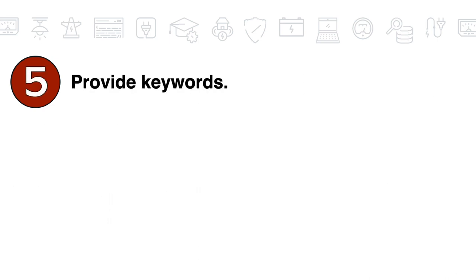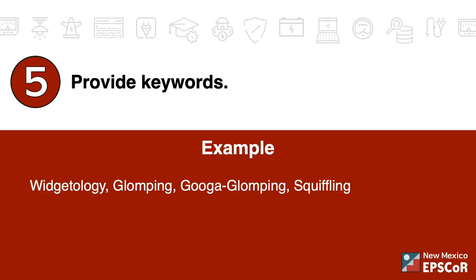Step five: provide keywords. Keywords help other researchers find your research and decide if they're interested. For example: Wiggettology, glomping, Guga Glomping, and squiffling.